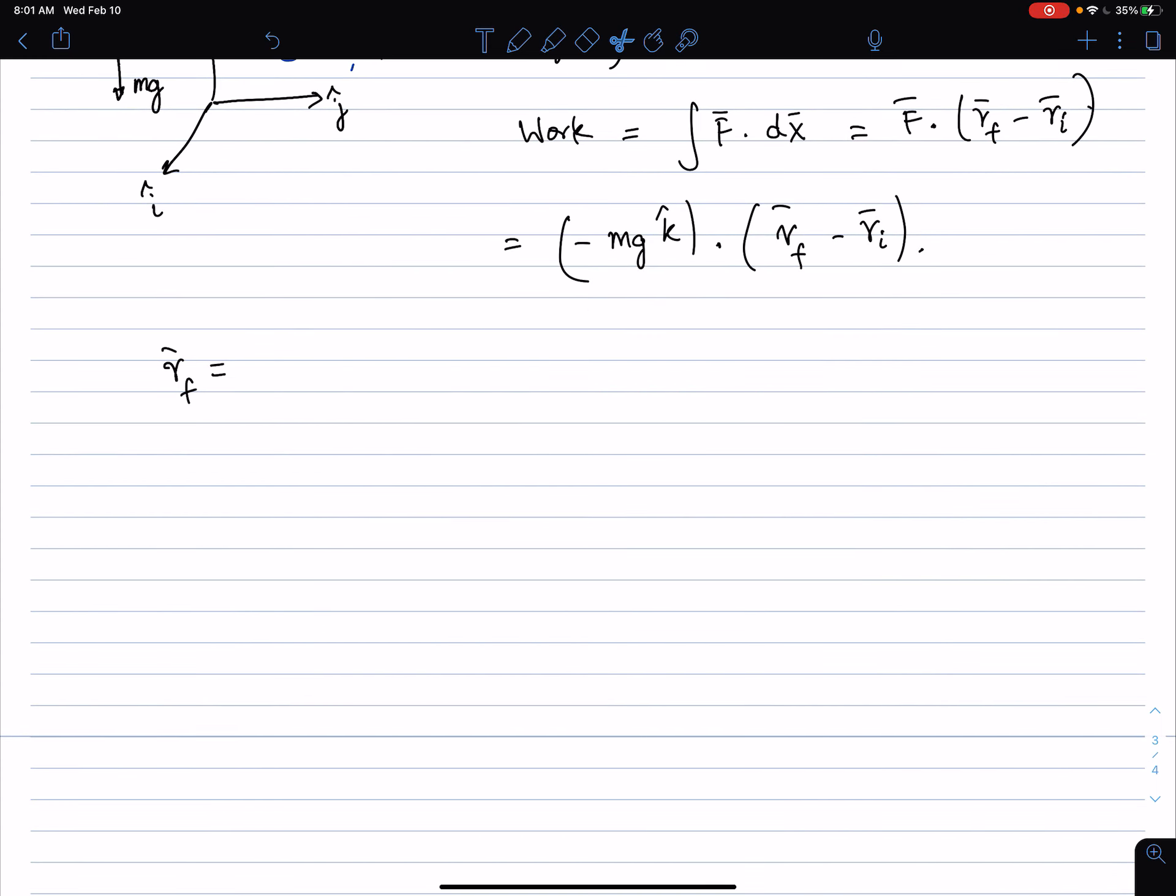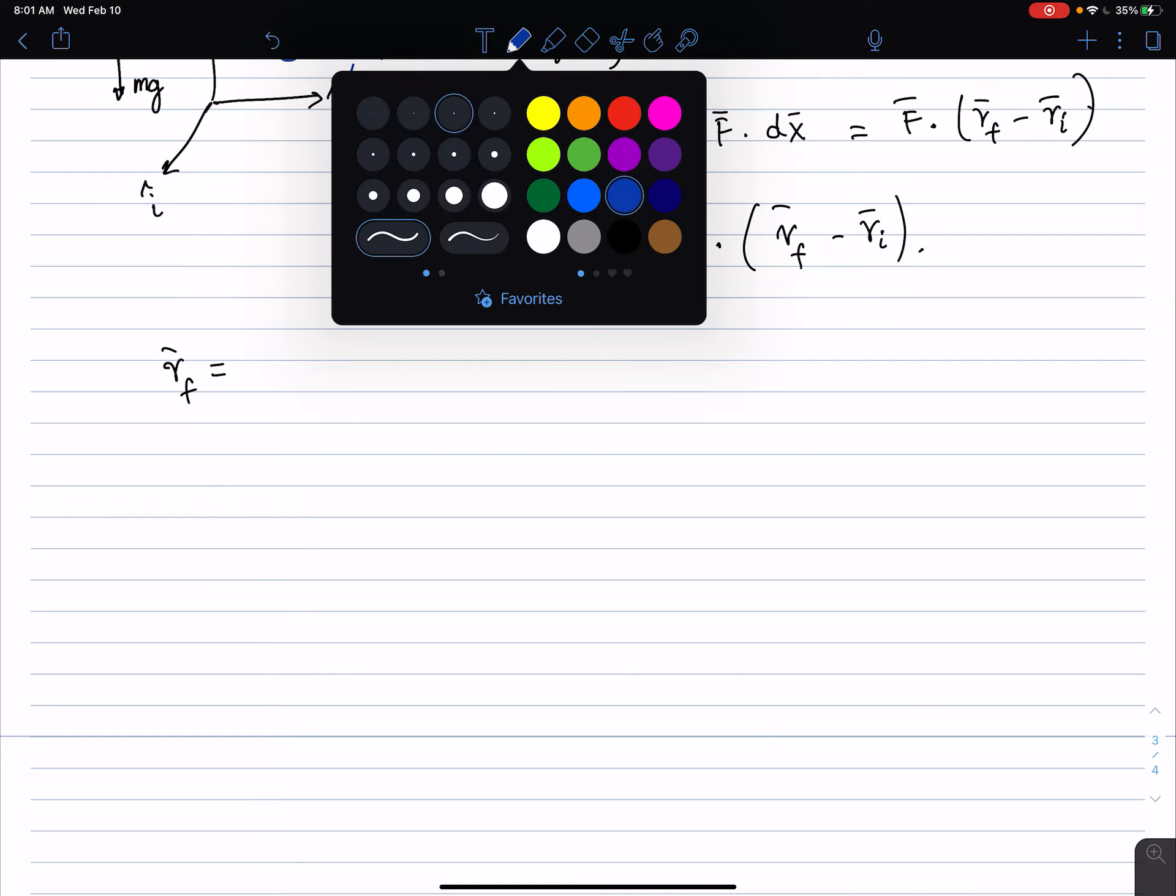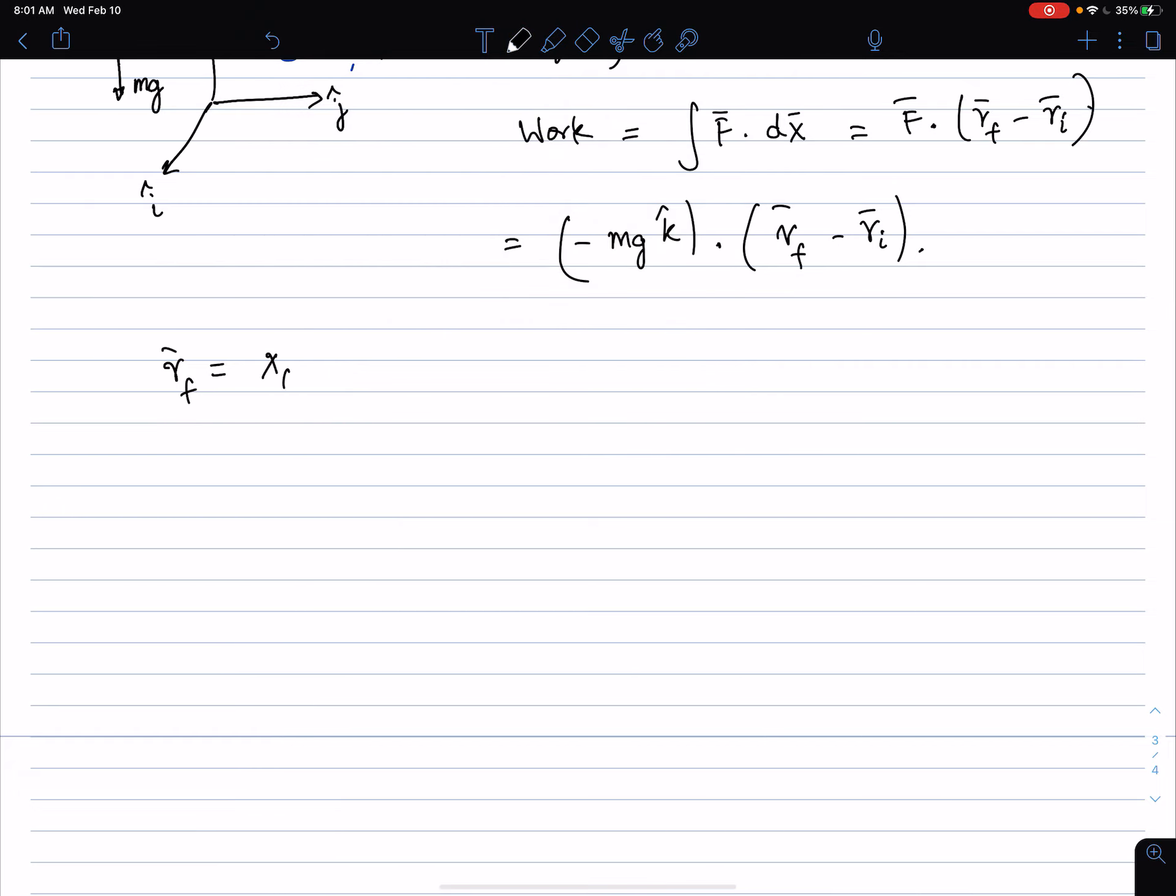So basically, we have x_f i plus y_f j plus z_f k, and initial position is x_i y_i times i plus y_i j plus z_i k. So when we take this dot product, what do we get?